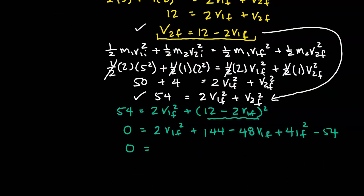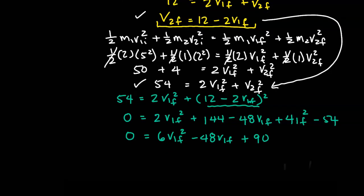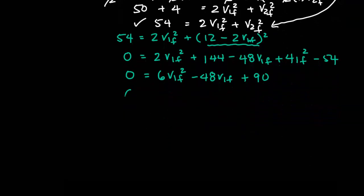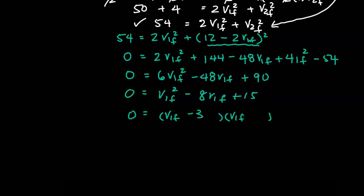Now I'm going to combine some of the terms. At this point you could use the quadratic formula, but I'm going to try to solve this by factoring — that's the easier approach. Dividing both sides by six, I factor to get (v1_final minus 3)(v1_final minus 5) equals zero. So my two possible solutions are v1_final equals 3 m/s or v1_final equals 5 m/s.